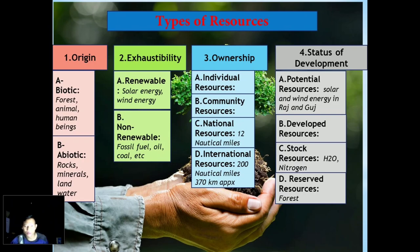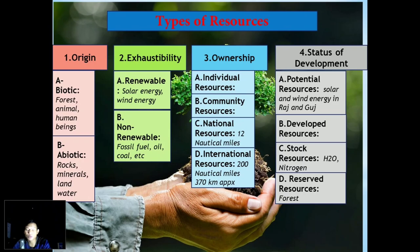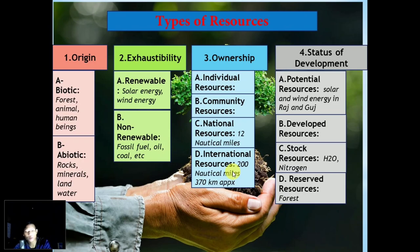Next, we'll see the types of resources. On the basis of origin we have biotic and abiotic — biotic means living, abiotic means non-living. On the basis of exhaustibility we have renewable and non-renewable. On the basis of ownership: individual resources are owned privately by individuals, such as your house or property. Community resources are owned by the community, such as community halls, parks, and playgrounds. National resources fall within the national political boundary and also at sea within 12 nautical miles. International resources are beyond 200 nautical miles at sea.